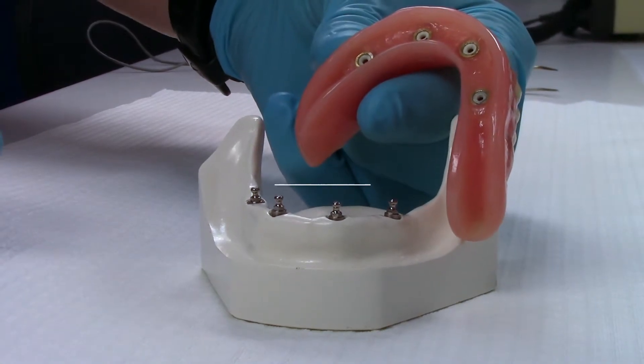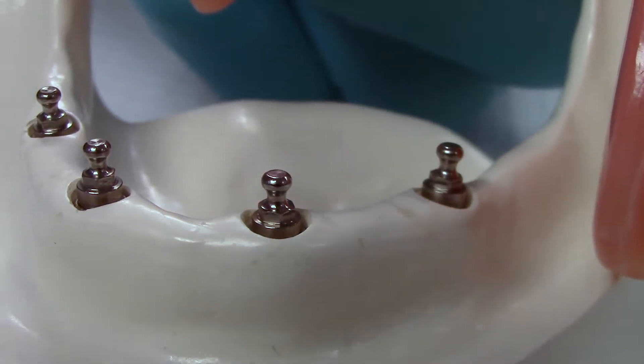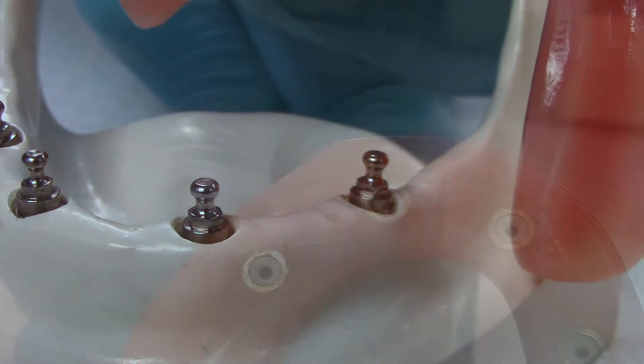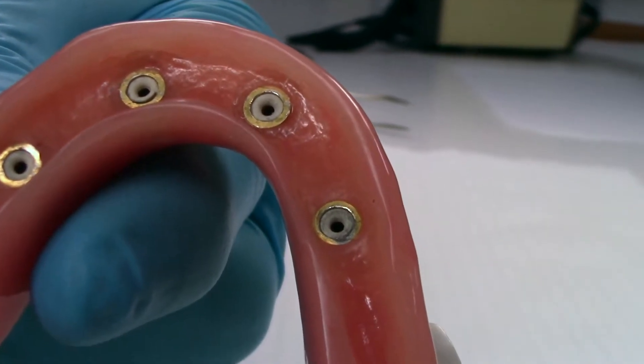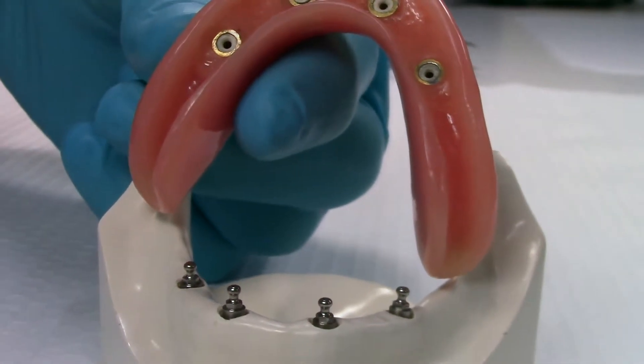The ORA Implant Abutment System is indicated for use with dental implants to support and retain removable dental prostheses in the treatment of partially or totally edentulous patients to restore chewing function.